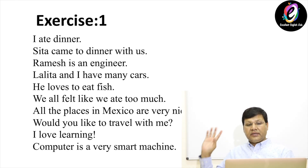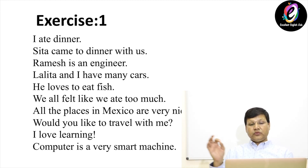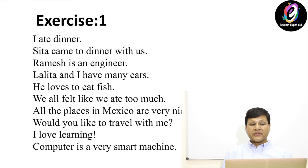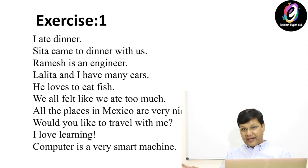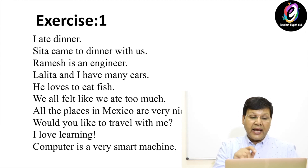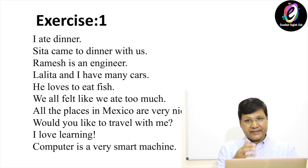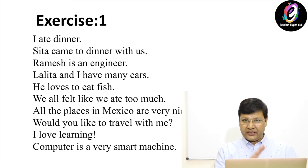Look at exercise number one. Here are the sentences: 'I ate dinner.' 'Sita came to dinner with us.' 'Ramesh is an engineer.' 'Lalitha and I have many cars.' 'He loves to eat fish.' 'We all felt like we ate too much.' 'All the places in Mexico are very nice.' 'Would you like to travel with me?' 'I love learning.' 'Computer is a very smart machine.' You will have to underline the subject and circle the predicate in these sentences. Thank you very much. Bye.